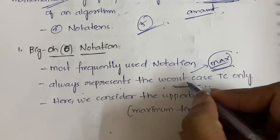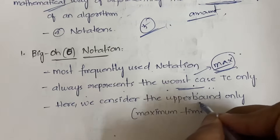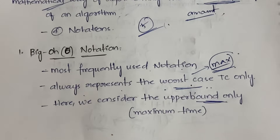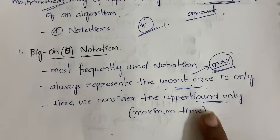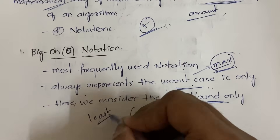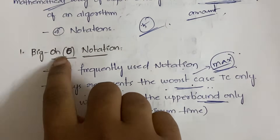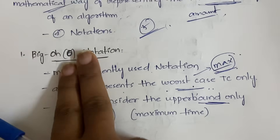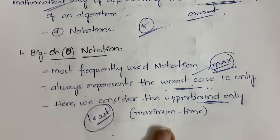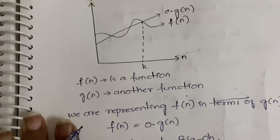Big O notation is used to represent the worst case time complexity, and we consider the upper bound — that is, the maximum time. Among upper bound values we consider the least maximum time, which is the least upper bound. So Big O means worst case time complexity and maximum time, which is the upper bound.